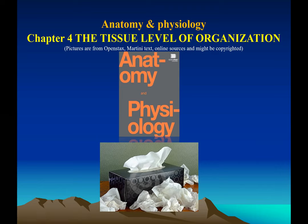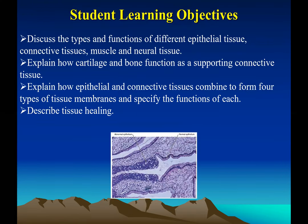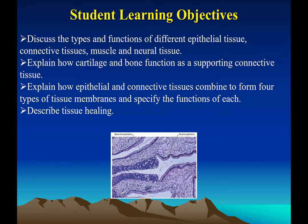Chapter four: the tissue level of organization. The learning objectives of this chapter are to understand the structure and function of the four main tissues in our body: epithelium, connective, muscle, and neural. In this chapter we'll focus on the epithelial and connective tissues, lightly cover muscle and neural tissue, talk about bones and cartilage, how tissues form membranes, and how tissue can heal itself when damaged.